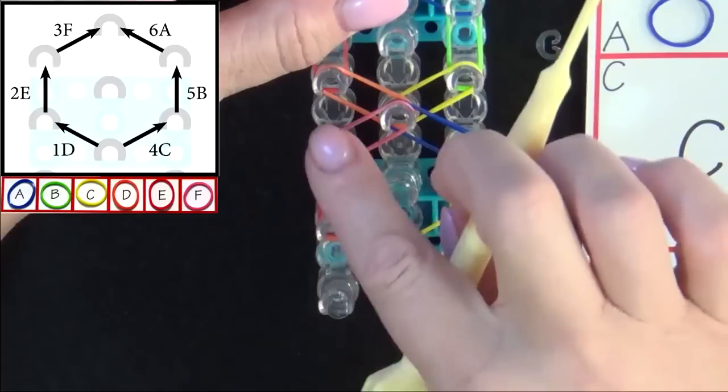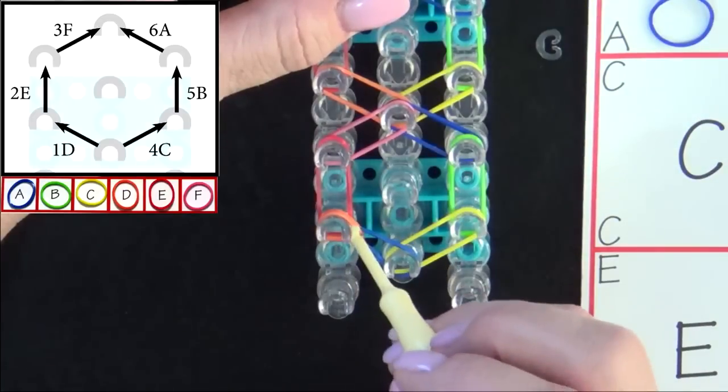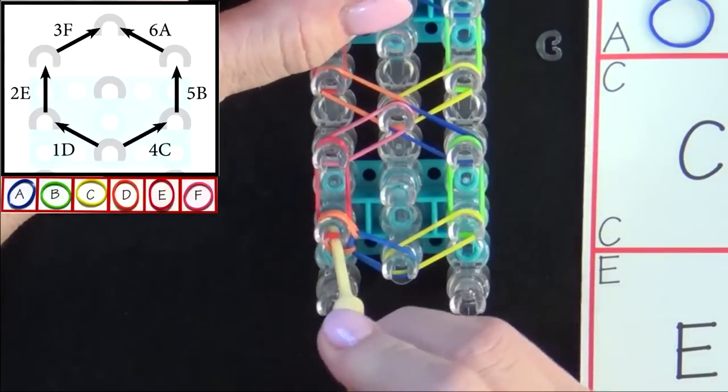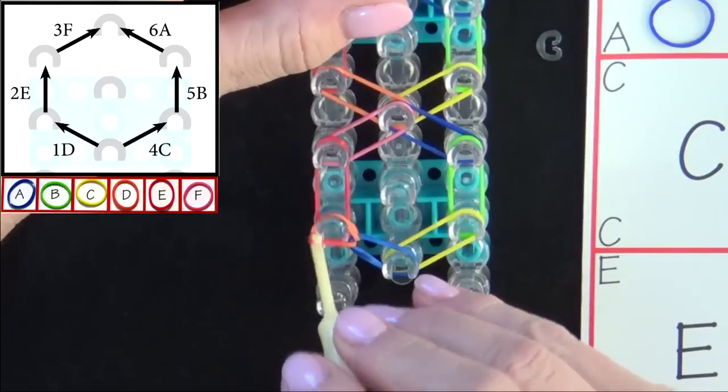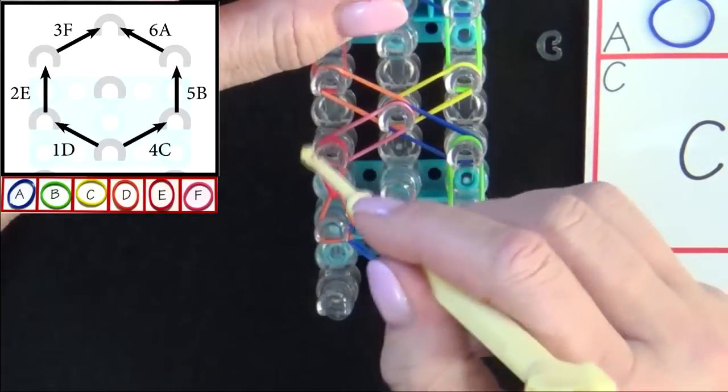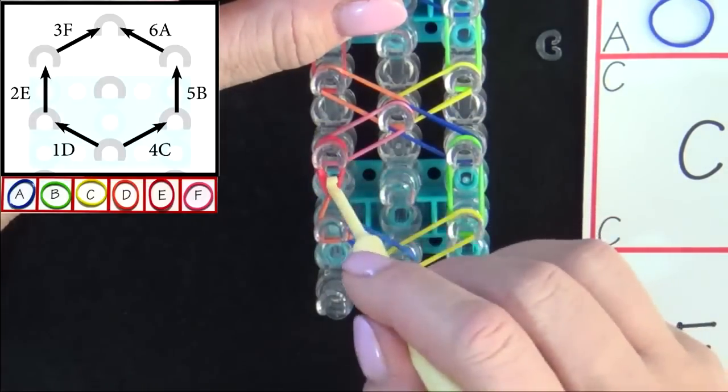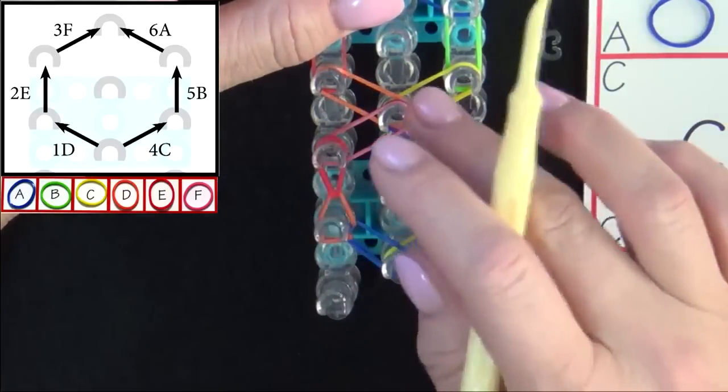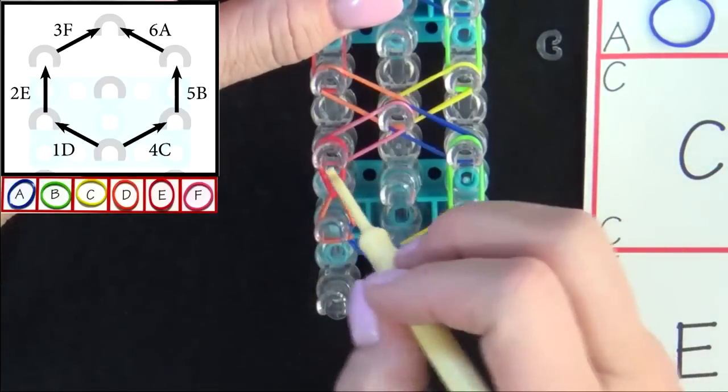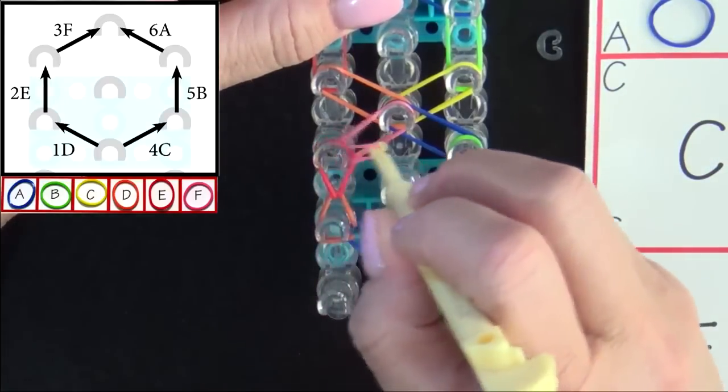The next band we loop will be 2E. You reach in and pull back the top D band. Grab the E and pull it forward. Again, notice how it made that teardrop shape. Band 3F will be pulled to the center. Now, let's go to the right band.